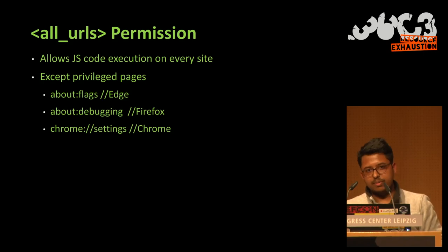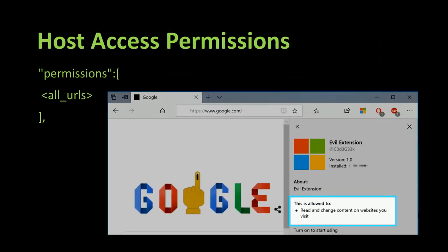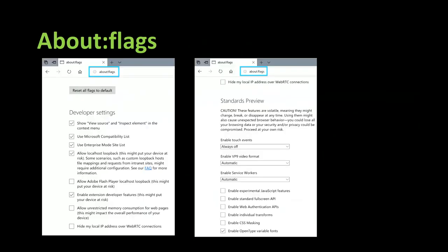On Edge, the equivalent privileged page is about:flags. You can imagine the situation if an extension could run JavaScript on chrome://settings — it could read or steal all your passwords and credit/debit card information. Here's a quick snapshot of about:flags in Edge. You can see important settings like enabling Adobe Flash Player, developer features, unrestricted memory consumption for web pages, and experimental JavaScript features — so you can imagine the sensitivity of this page.